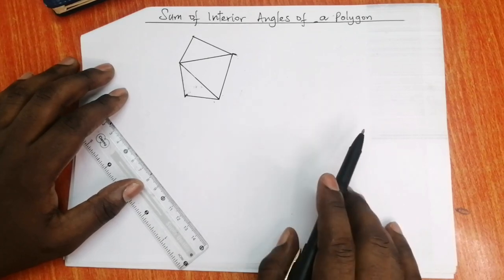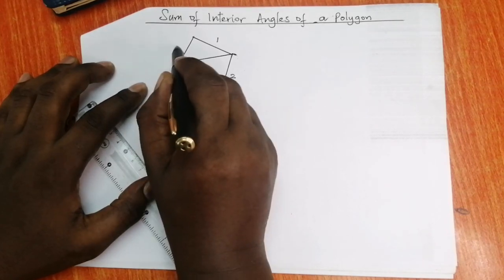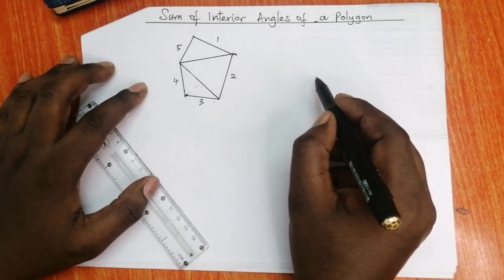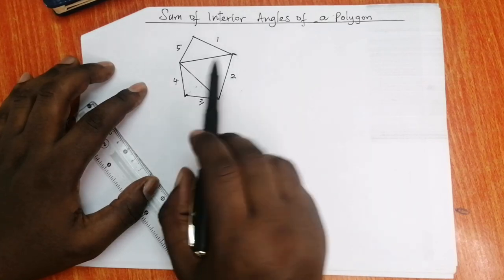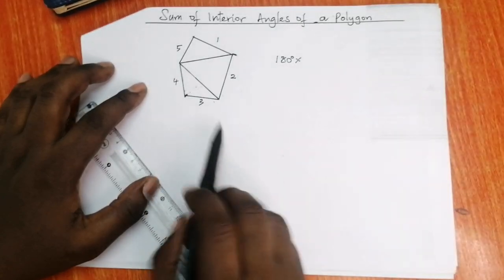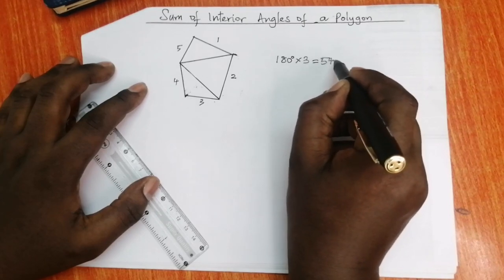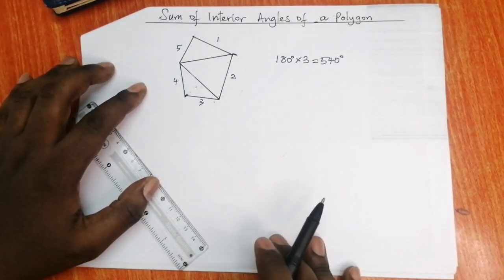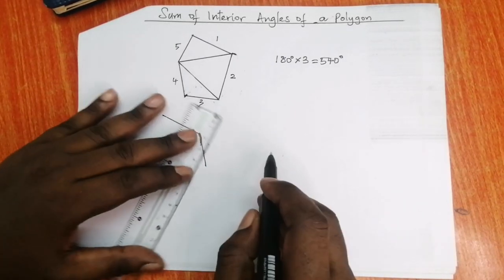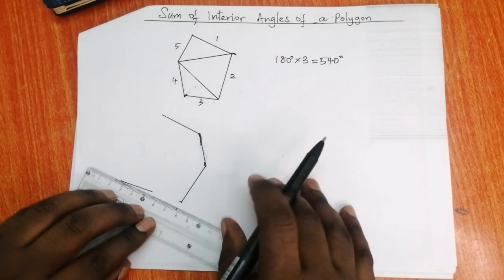How many sides does this polygon have? One, two, three, four, five. How many triangles? One, two, three. We know that the sum of interior angles of a triangle is 180 degrees. 180 degrees times three triangles gives you 540 degrees. Now let's draw another polygon and see what happens again.